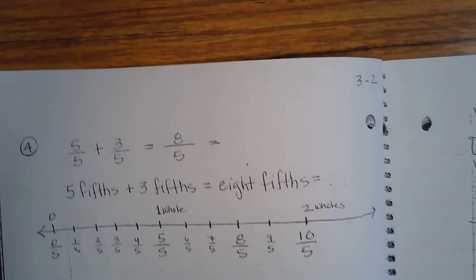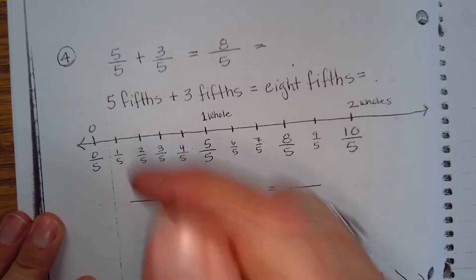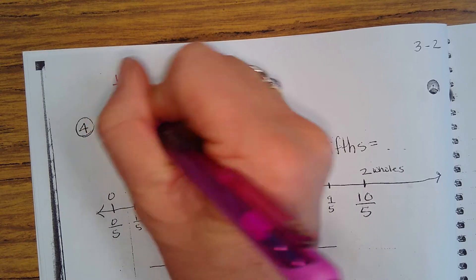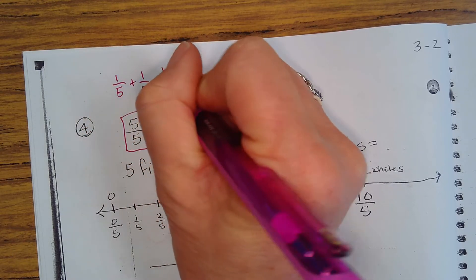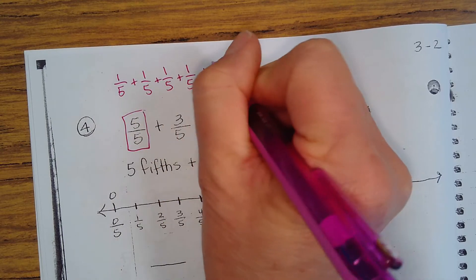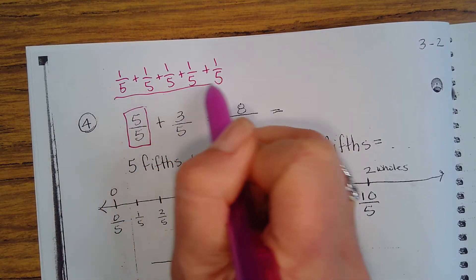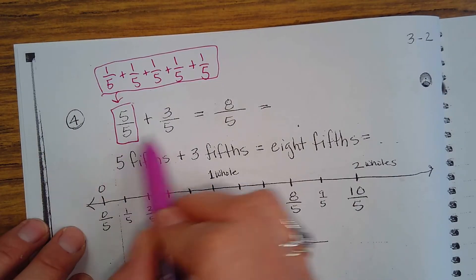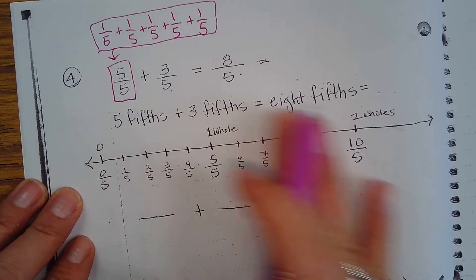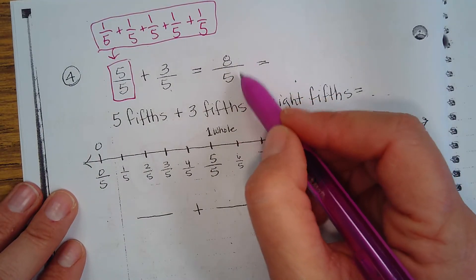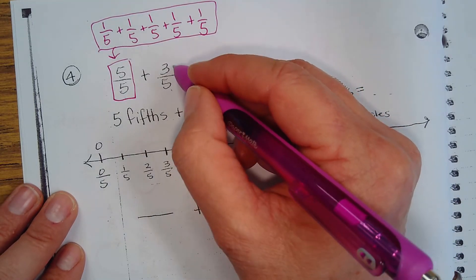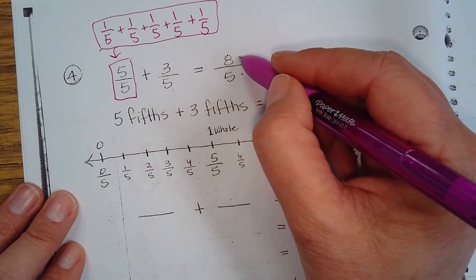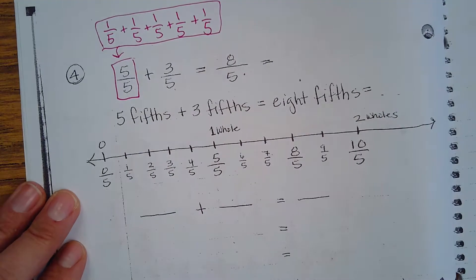Let's now go to five-fifths. How many fifths are hiding inside five-fifths? One-fifth, two-fifths, three-fifths, four-fifths, five-fifths are all hiding inside. Now we have five-fifths plus three-fifths, which is eight-fifths. This is called an improper fraction. A proper fraction has a numerator smaller than the denominator. The minute your top number is greater than the bottom number, it's called improper.